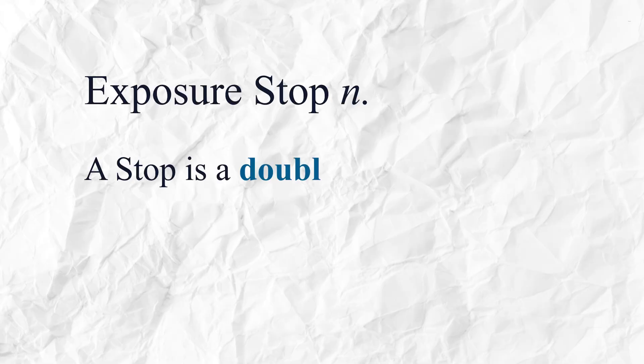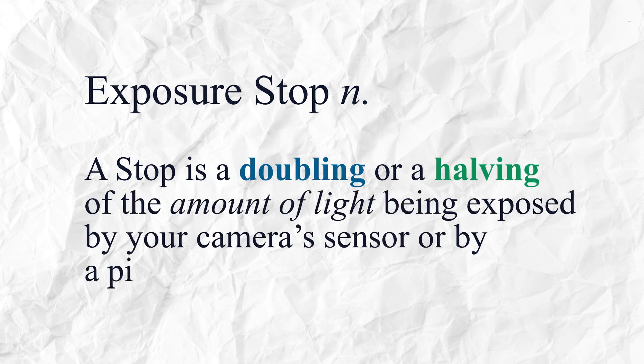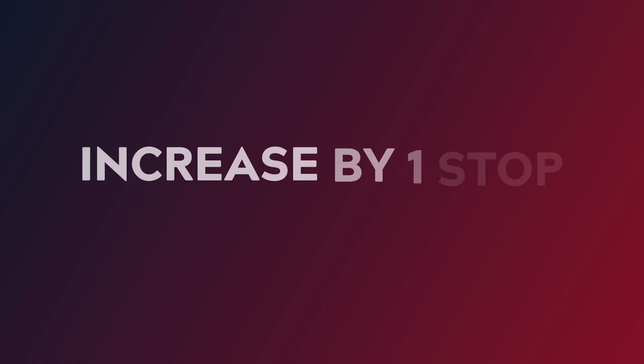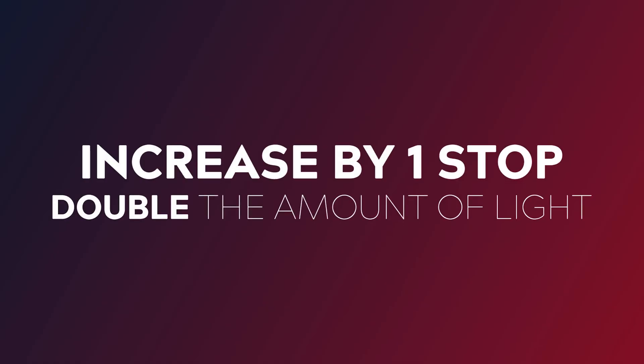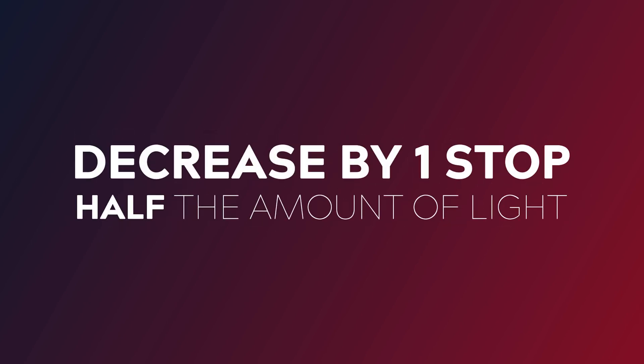So what is an exposure stop? To put it simply, a stop is a doubling or a halving of the amount of light being exposed by your camera's sensor or by a piece of film. So if you increase your exposure by one stop, you get double the amount of light. And if you reduce your exposure by one stop, you get half the amount of light. That's the easy part.